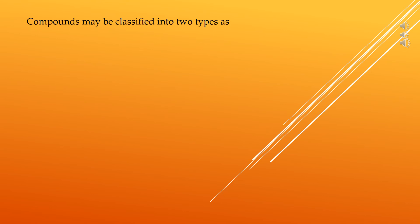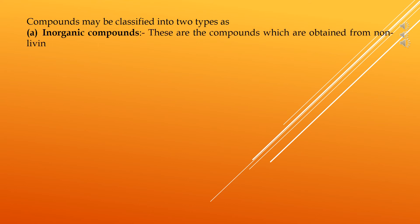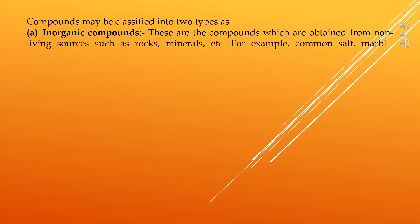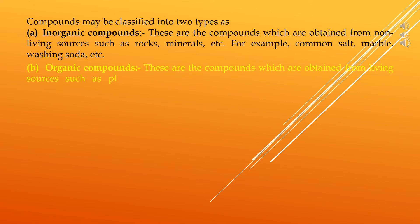The first type of compounds are inorganic compounds — these are compounds obtained from non-living sources such as rocks and minerals. Examples include common salt, marble, and washing soda. The second type is organic compounds — these are compounds obtained from living sources such as plants and animals, and they all contain carbon. Examples include carbohydrates, oils, fats, and proteins.